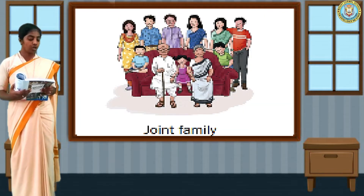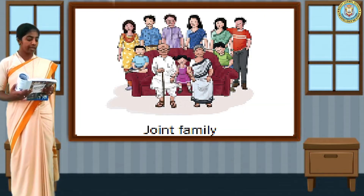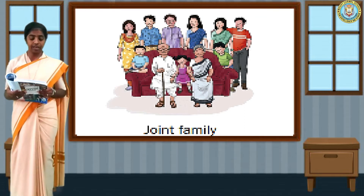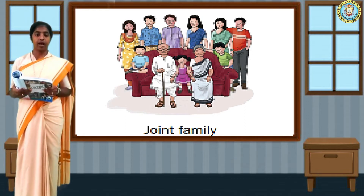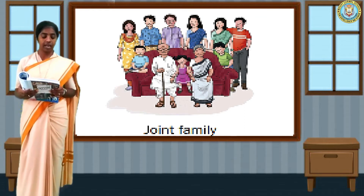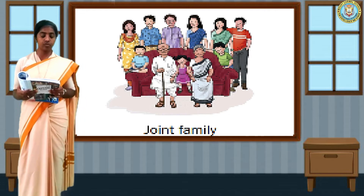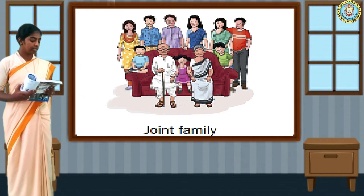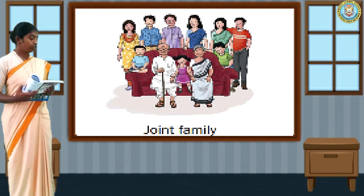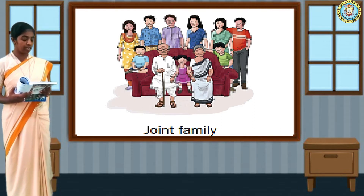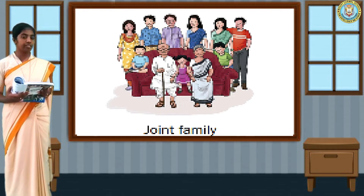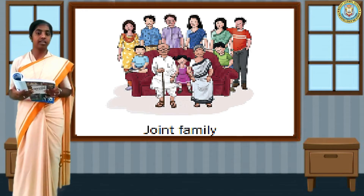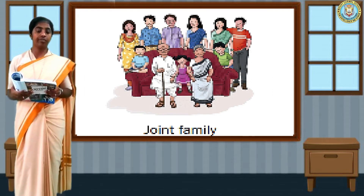In a joint family, parents, children, grandparents, uncles, aunts, and cousins all live in the same house. You can see here many members like grandparents, parents, uncles, and aunts. This is called a joint family.